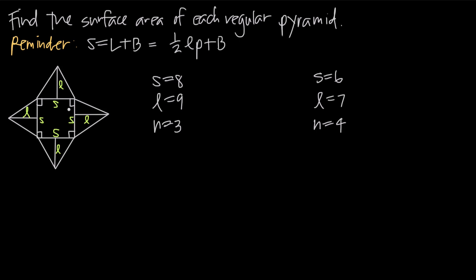A square pyramid is one example, but you could also have a regular pyramid that's a triangular pyramid, where the triangular base is an equilateral triangle. You could also have a regular pentagonal pyramid where all five sides are equal, or a regular hexagonal pyramid where all six sides are equal. It doesn't have to be square-based — it just requires all sides of the base to be equal.